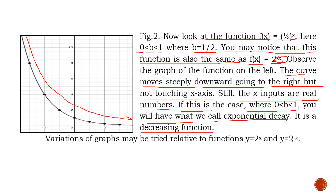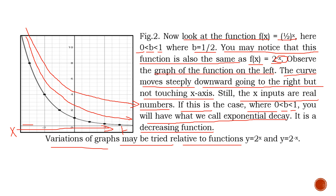If this is the case where 0 less than b less than 1, you will have what we call exponential decay — it is a decreasing function. When your x increases from negative to positive values, your y decreases. This presents an exponential decay, and it is a decreasing function. Variations of graphs may be tried relative to functions: y equal to 2 raised to 2x and y equal to 2 raised to negative x — that's how we graph relative functions.